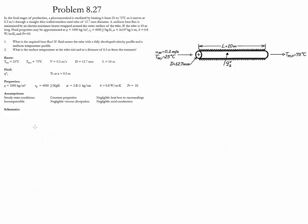The next step is to determine the surface temperature at the outlet and at x = 0.5 meters. To do that we need to determine whether the flow is laminar or turbulent. The Reynolds number is equal to density times velocity times diameter divided by viscosity. For the values given, Re = 1270, which is less than the critical value, so the flow is laminar.